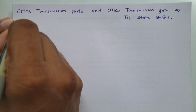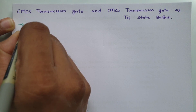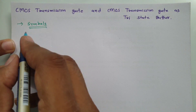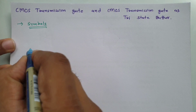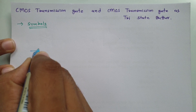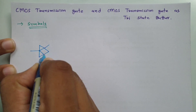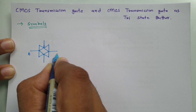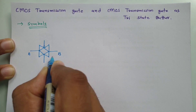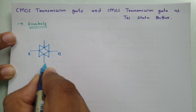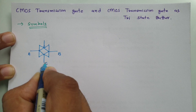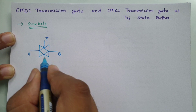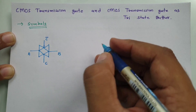When we talk about the symbol of CMOS transmission gate, there are different symbols. Let me draw one symbol — here this is my input, let us say it is A, and my output let us say that is B, and here we have control signal C and complement of control that we need to give over here. So this is one symbol of CMOS transmission gate.